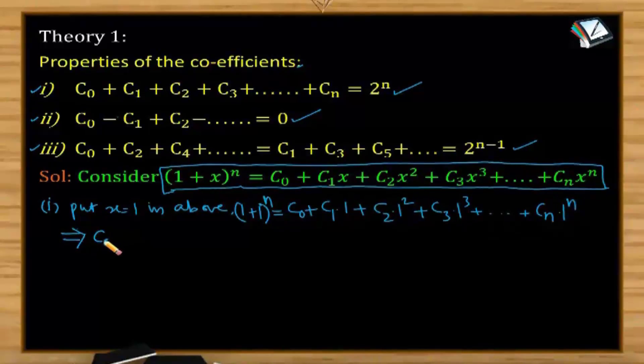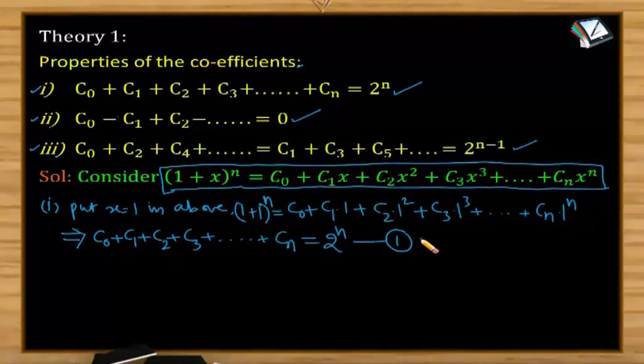So you will get C0 plus C1 plus C2 plus C3 plus and so on plus Cn equals 1 plus 1 equals 2 to the power of n. This is the very first property what we have proved.